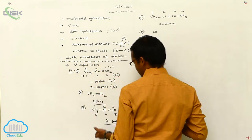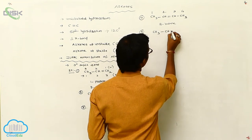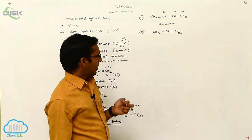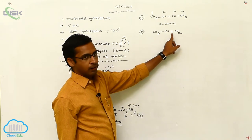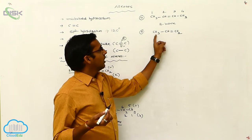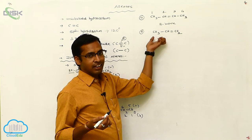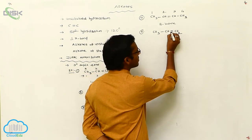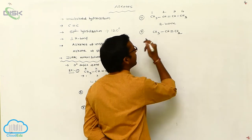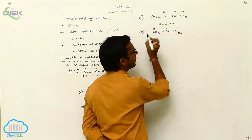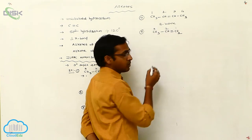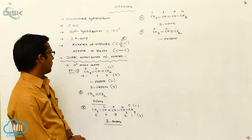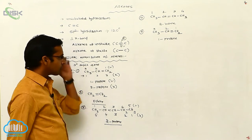Now consider an unsymmetrical alkene, for example CH3-CH=CH2. When the plane is passed through the double bond, the parts are not identical — there are no identical atoms. So this is called an unsymmetrical alkene. Numbering gives 3 carbons with the double bond at position 1, so the IUPAC name is 1-propene.